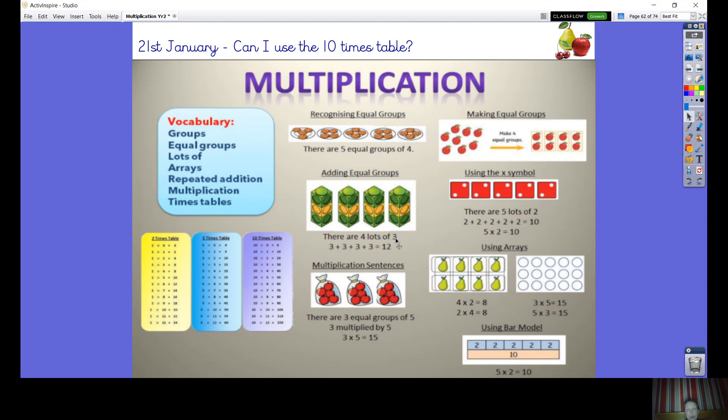Our vocabulary is groups, equal groups, lots of, arrays, repeated addition, multiplication, times table. We make equal groups and recognize equal groups, we can add those groups together, we can use the multiplication symbol, we can write multiplication sentences, and we can draw arrays and link it to the bar model. We've done our two times table, we're now going to do our 10 times table, tomorrow we'll finish with our five times table.